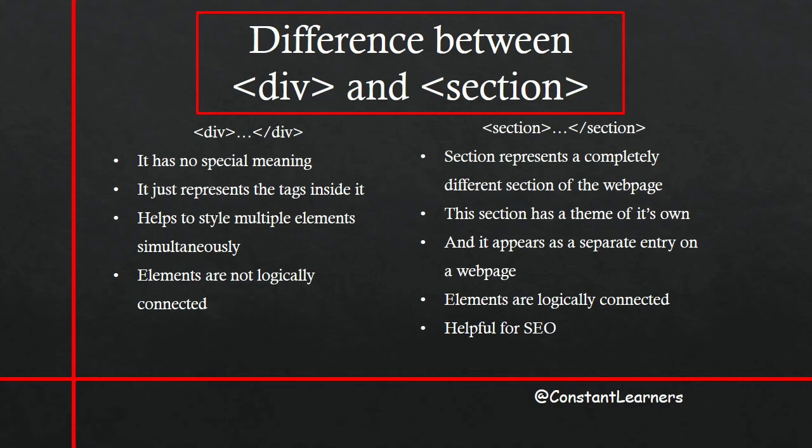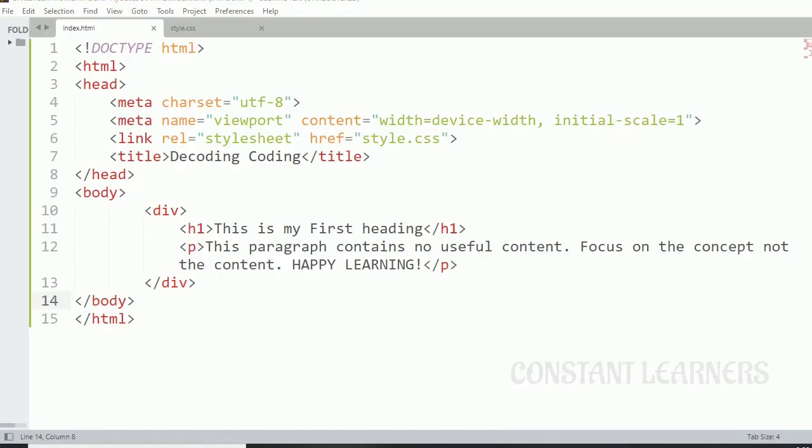Now we are going to see how to write the div tag and the section tag and what difference it makes on the web page. So I have opened my text editor. I am using Sublime Text here. You can use any editor of your choice. And I have also created a basic document here with all the basic tags and a div tag here. You can see this div tag. Within this I have my heading and a paragraph.